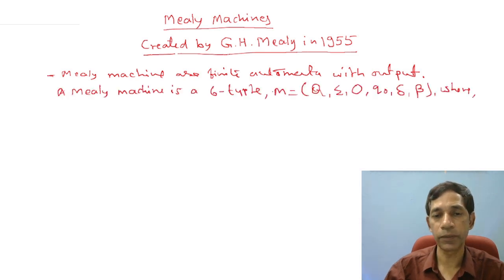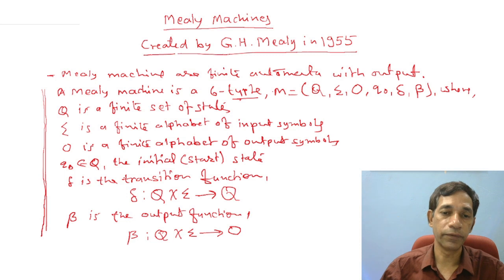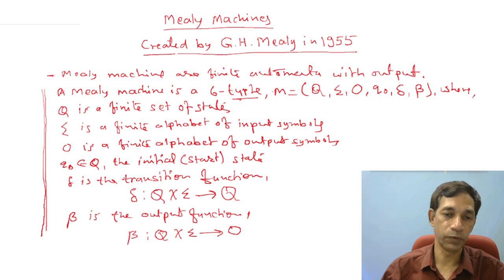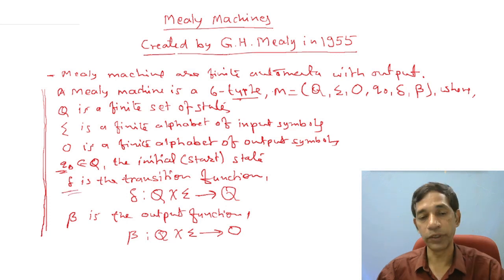A Mealy machine is a six-tuple M = (Q, Σ, O, q0, δ, β), where Q is a finite set of states, Σ is the finite alphabet of the input symbols, O is the finite alphabet of the output symbols, and q0 is the initial state from which your machine starts.